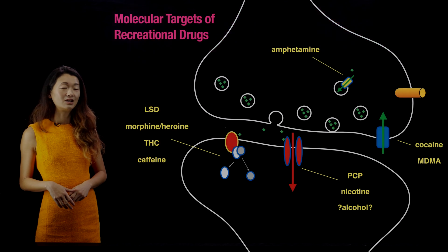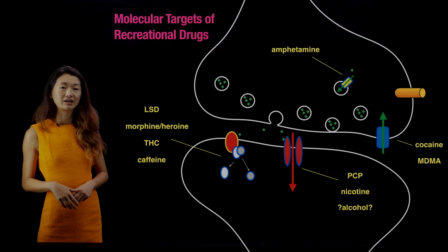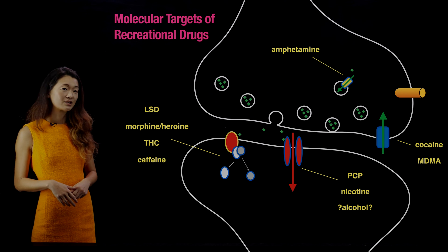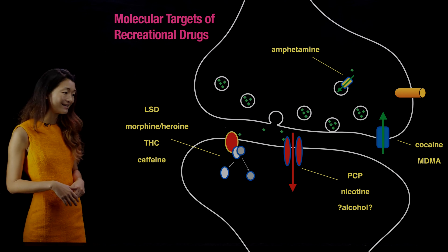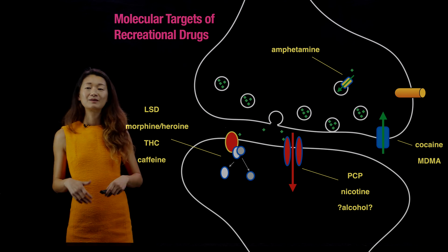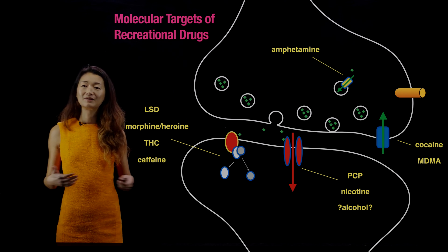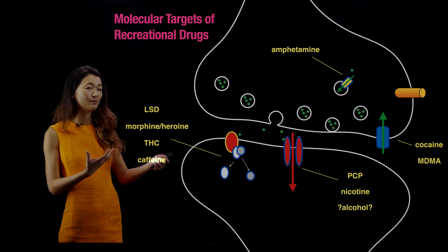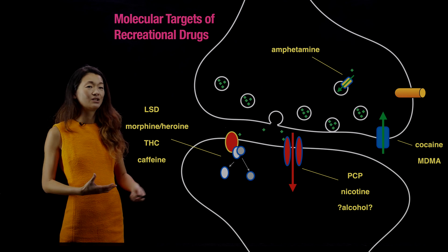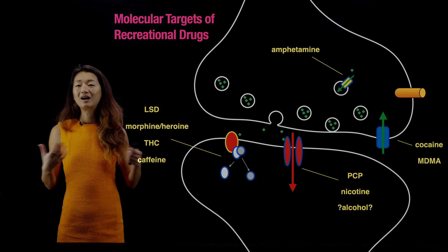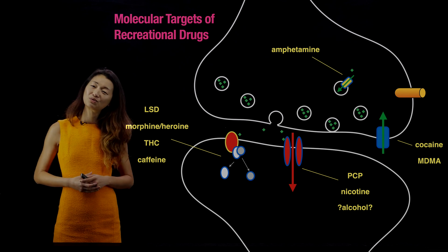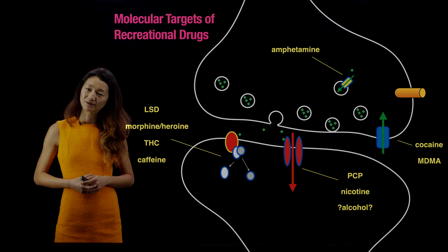That is our whirlwind tour of the molecular targets of recreational drugs. I hope this gives you some insights into the different steps of synaptic transmission, as well as the different ways they can be modulated to have very complex effects that manifest in sometimes interesting ways in your nervous system.